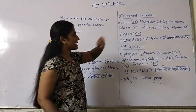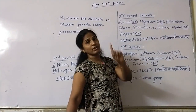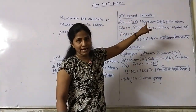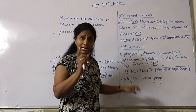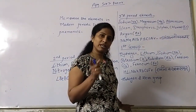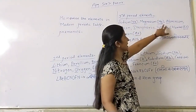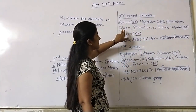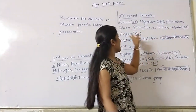The third period elements are: Sodium, Magnesium, Aluminium, Silicon, Phosphorus, Sulfur, Chlorine, Argon. Here we use symbols because Sodium's symbol is Na, not S. So we take the symbols: Na, Mg, Al, Si — but only S — P for Phosphorus, S for Sulfur, Cl for Chlorine, Ar for Argon.